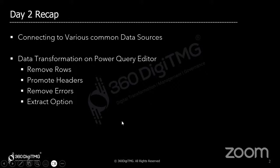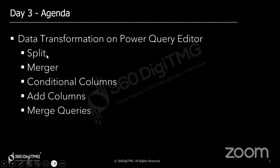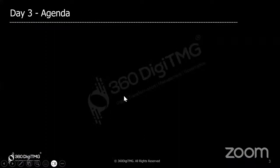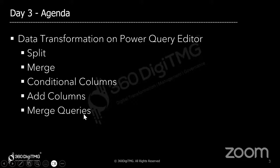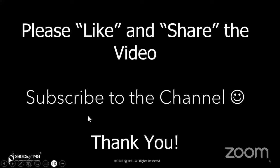Today, what we will discuss is a few more options under data transformation on the Power Query editor. How do we split a column or field? How do we merge columns? How do we create columns based on some conditional statements — conditional columns — add columns by example, and merge queries. Remember, query means table. A table is referred to as a query in Power BI.